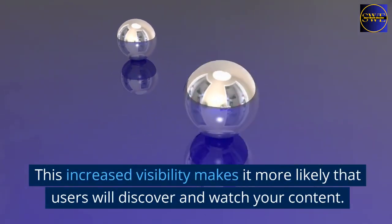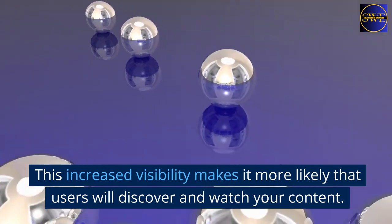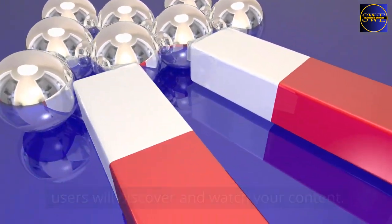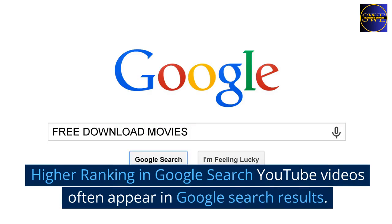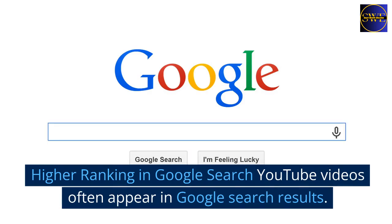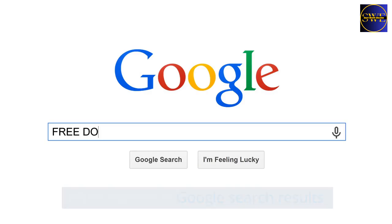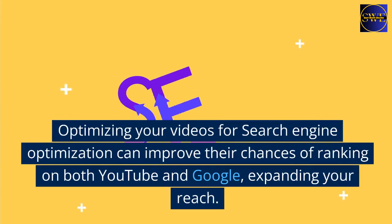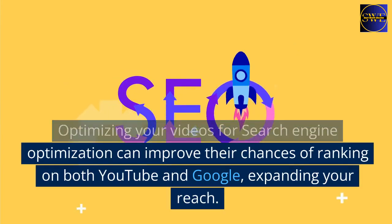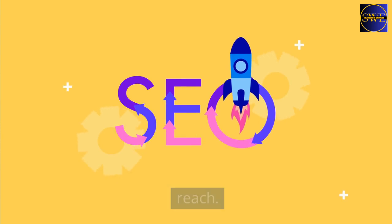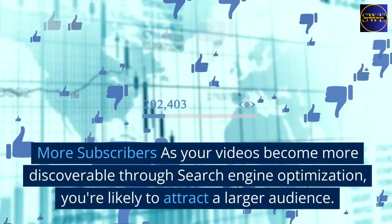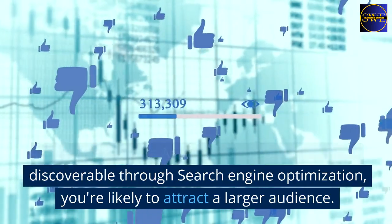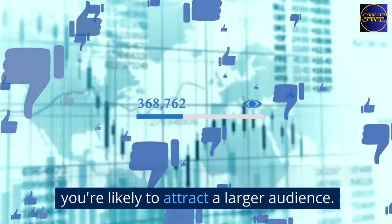Increased visibility: SEO helps your videos rank higher in YouTube search results. This increased visibility makes it more likely that users will discover and watch your content. Higher ranking in Google search: YouTube videos often appear in Google search results. Optimizing your videos for SEO can improve the chances of ranking on both YouTube and Google, expanding your reach.